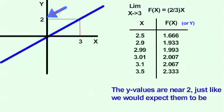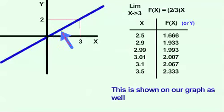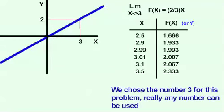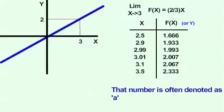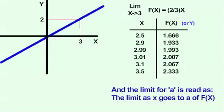This is shown on our graph as well. We chose the number 3 for this problem, but really any number can be used. That number is often denoted by the variable a, and the limit is read as the limit as x goes to a of f of x.